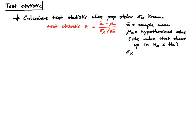Sigma x is the population standard deviation and n is the sample size.